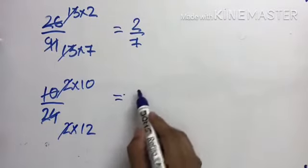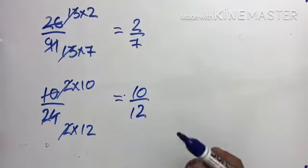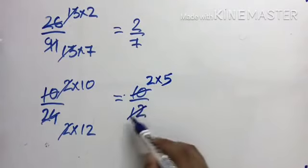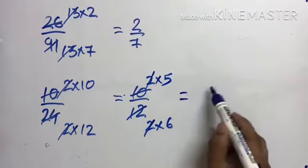Answer is 10 by 12. Now see, both again are in 2's table. This is 2 times 5 and this is 2 times 6.